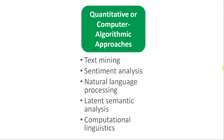What about quantitative or computer algorithmic-based approaches? These have really been allowed to come into their own as computers, technology, computer processing speed, and so forth have been increasing very rapidly. Especially with the emergence and availability of artificial intelligence and machine learning algorithms, that has really taken our computer-based or quantitative-based approaches to text analysis to the next level. While we're not to the point where we can interpret something with the same degree of nuance a human being can, machines are getting closer. Different types of quantitative or computer algorithmic approaches include text mining, sentiment analysis, natural language processing, latent semantic analysis, and computational linguistics.